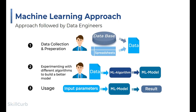The primary step in the machine learning approach is data collection and preparation. External sources such as a database or a spreadsheet are used to collect the data. This data is prepared for further use. After gathering appropriate data in step one, the next step for a data engineer is to experiment with existing machine learning algorithms to build a better machine learning model, which is later used to get predicted outcomes when provided with test data.